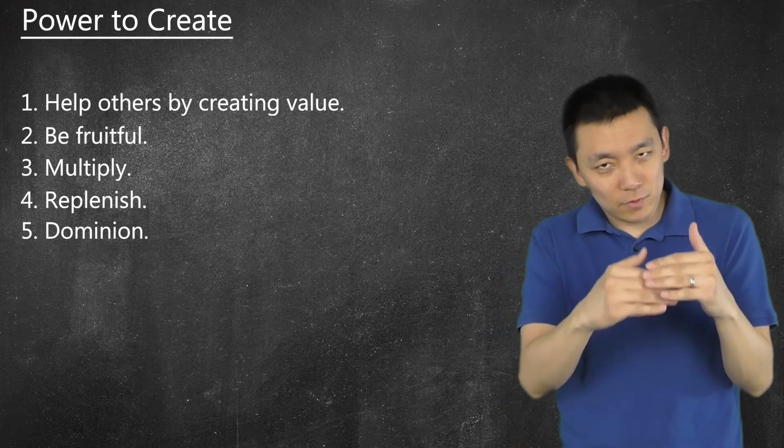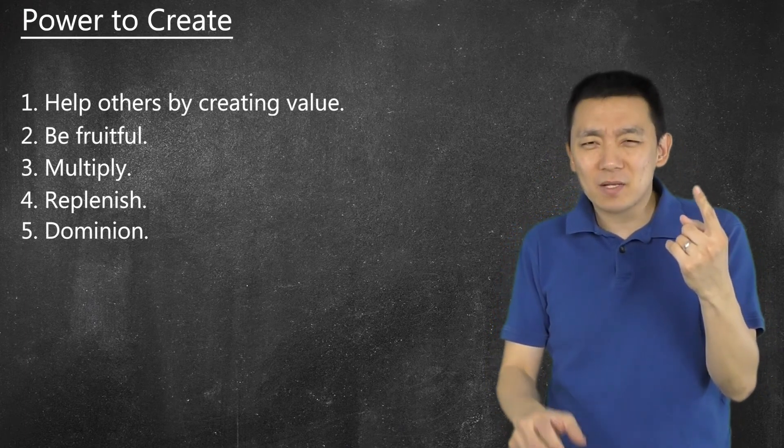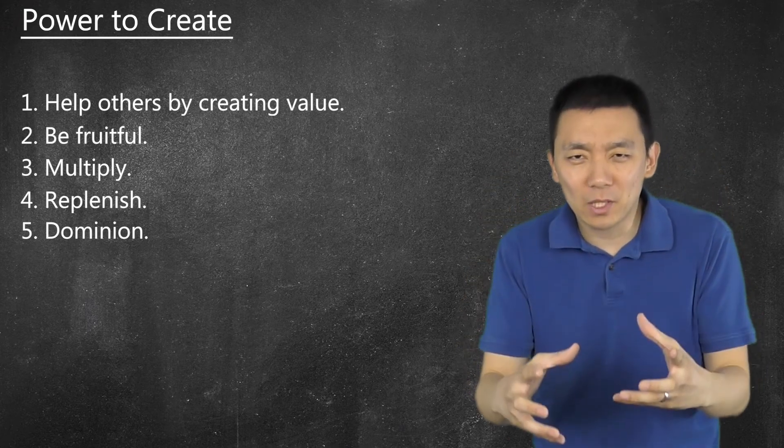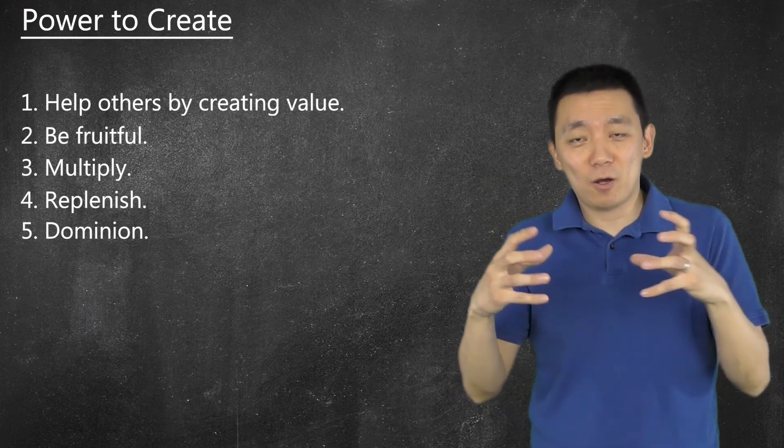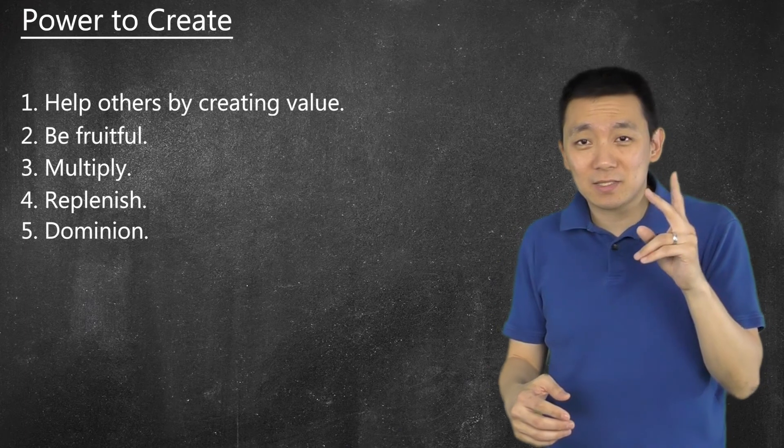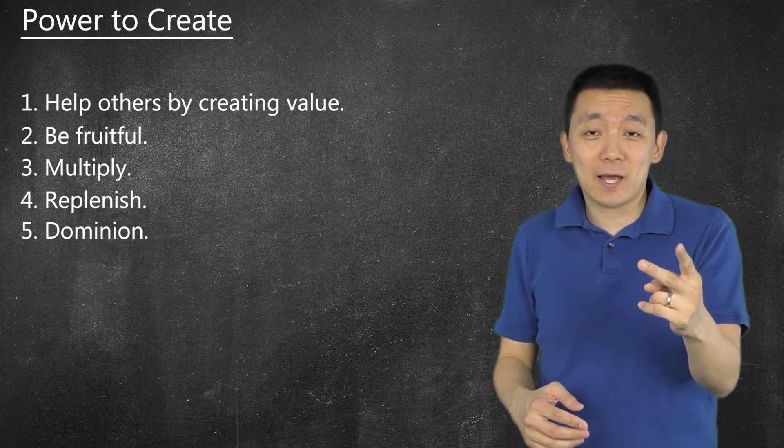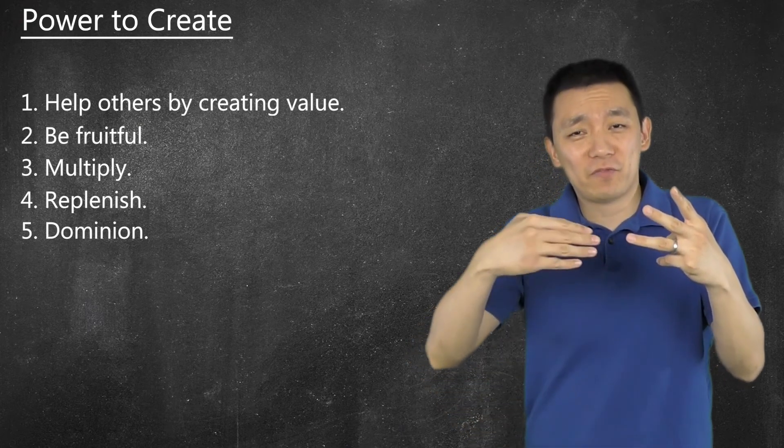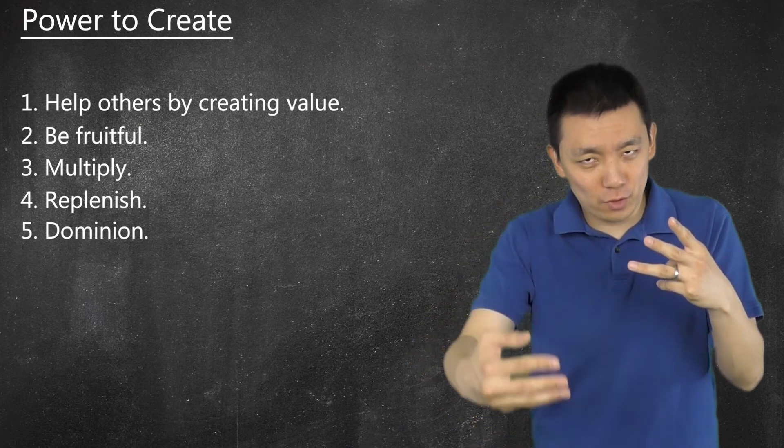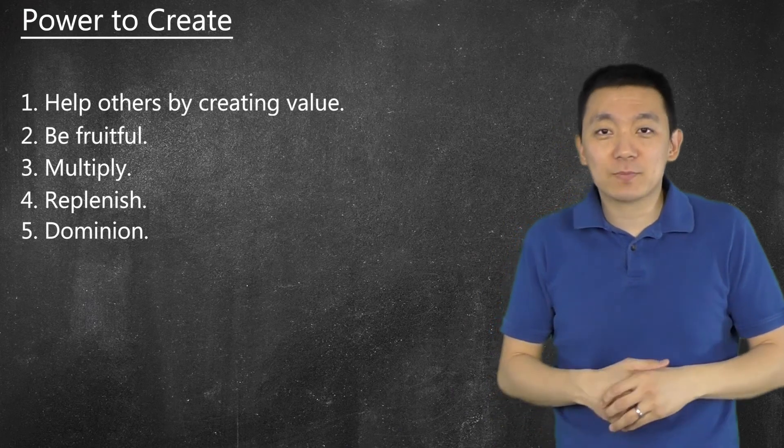Number two to five, be fruitful, make something great, make something super helpful, whatever it is that can help people. Make sure it's tested, time approved. And then after be fruitful, then you multiply, then you replenish, refill, course correct, distribute.